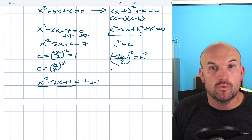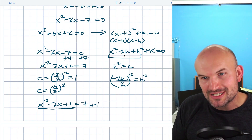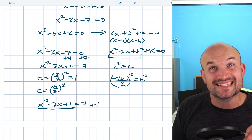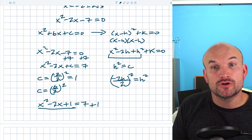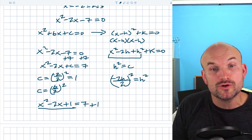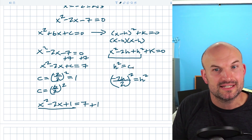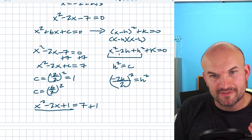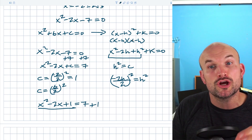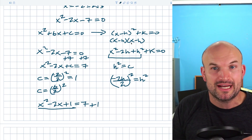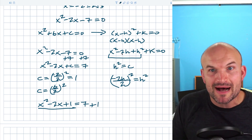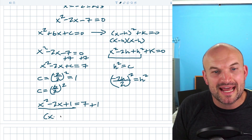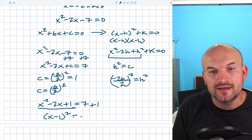Now I need to factor this down. Going back to the expanded form x squared minus 2hx plus h squared, the h value is the square root of c. Notice that since the middle term is negative, both binomials are negative; if the middle term were positive, both would be positive. So I can factor this to (x minus 1) squared equals 8.